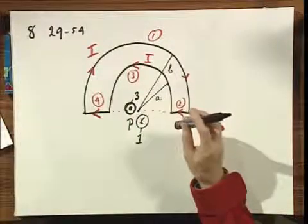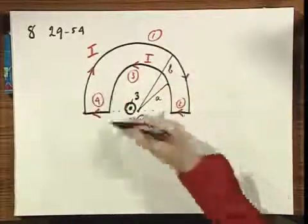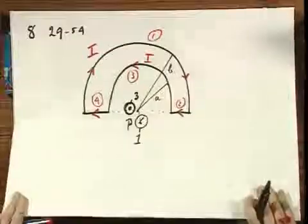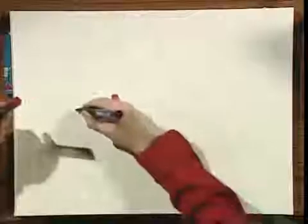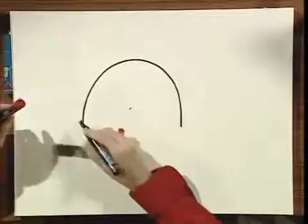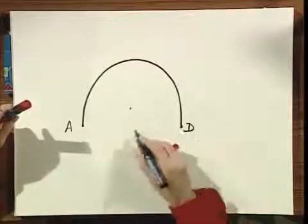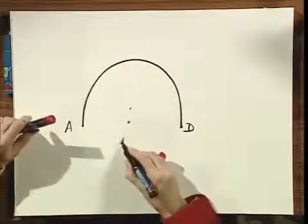What I propose to do is to simply calculate for you the magnetic field of one arc, and then I am sure that you can do the superposition of both arcs. So here is one arc, I call this point A and I call this D, and this is the center, this is P.